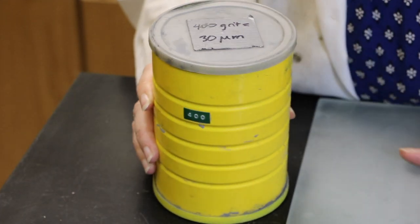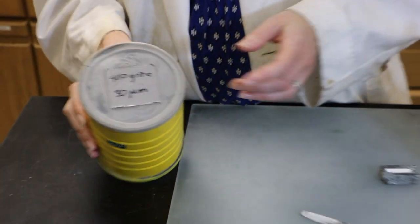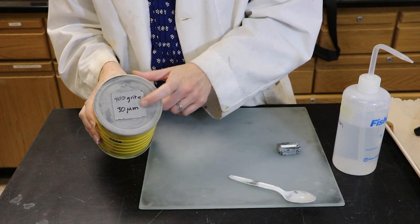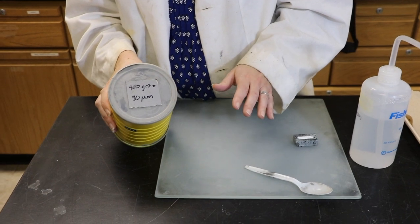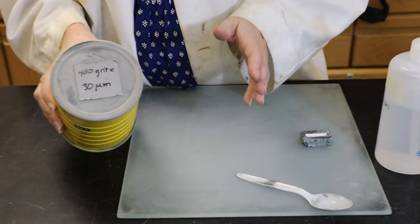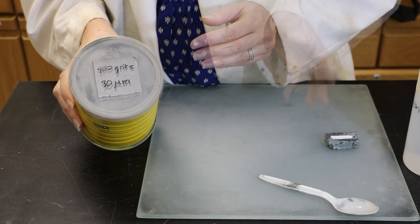The theory behind polishing is that you want to polish using a coarser grit, meaning a higher micrometer number like 30 micrometers first to flatten out your sample, and then you go to smaller and smaller grit sizes. The next size down we have is 15 micrometers and then maybe 9 micrometers after that.